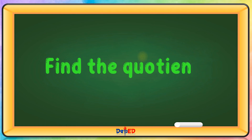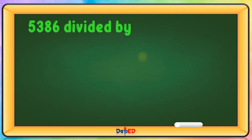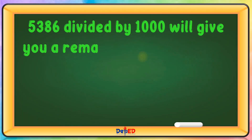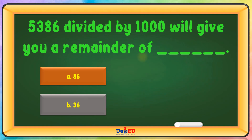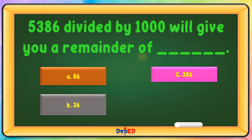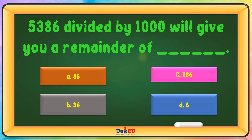Find the quotient. 5,386 divided by 1,000 will give you a remainder of? A. 86, B. 36, C. 386, or D. 6. The correct answer is C.